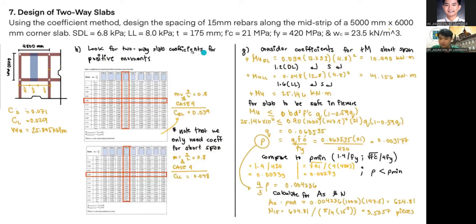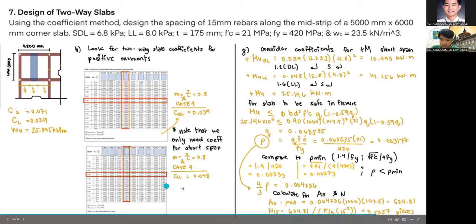Our next step is to look for two-way slab coefficients for the positive moments. Here we have two tables. For case 4, we have 0.8, and case 4 again, we have the value for CDL, which is 0.039. Then here for case 4 again with value for m of 0.8, we get CLL, which is 0.048. This is CD dead load and CD live load. This table's for dead loads, and this table's for live loads.